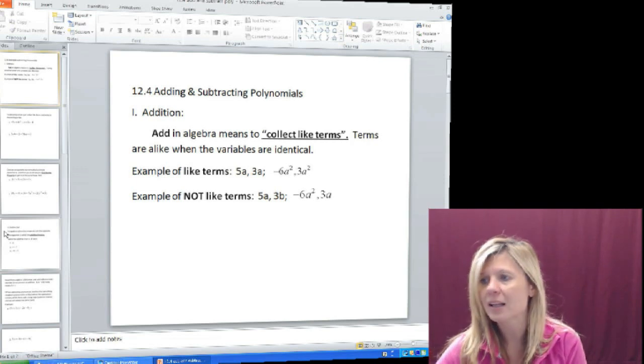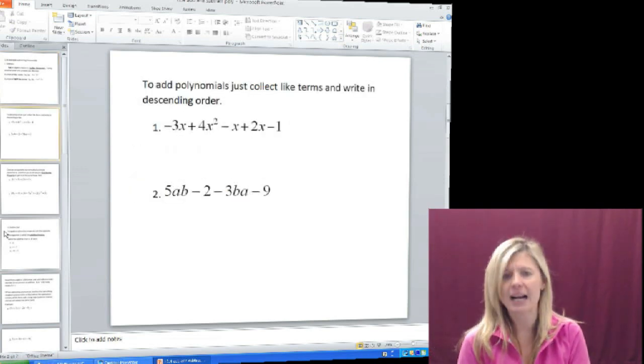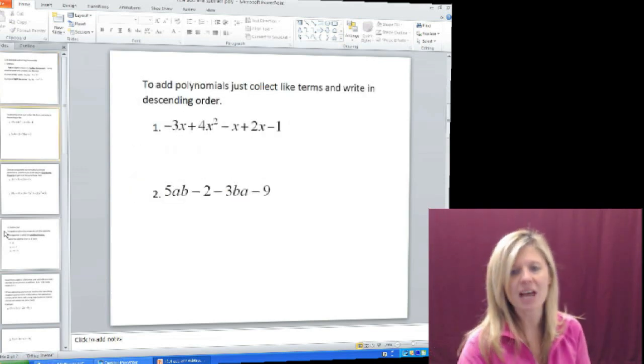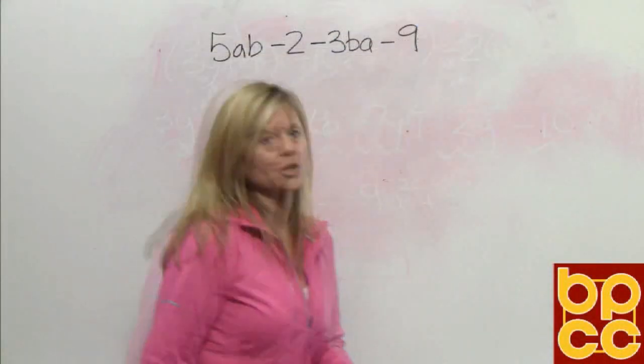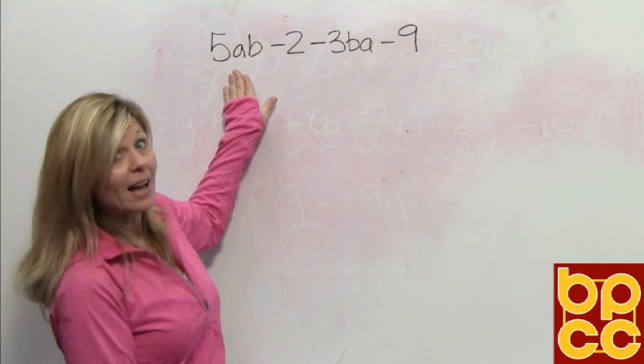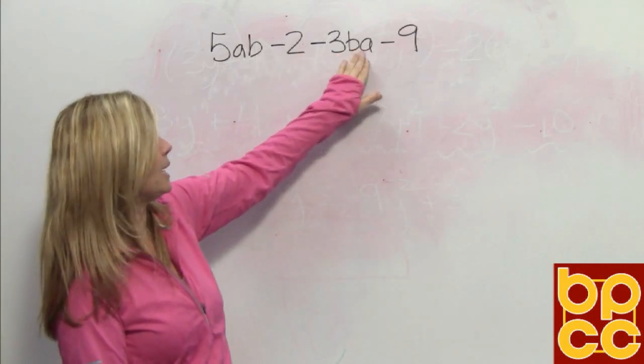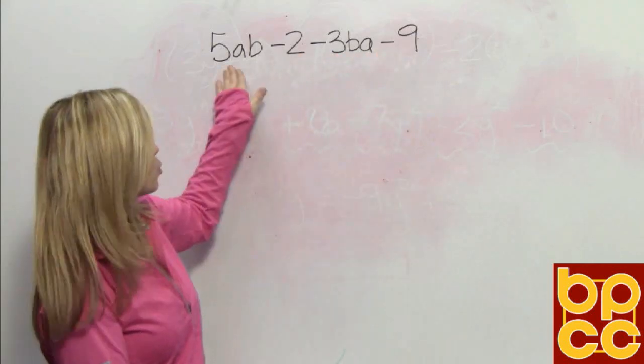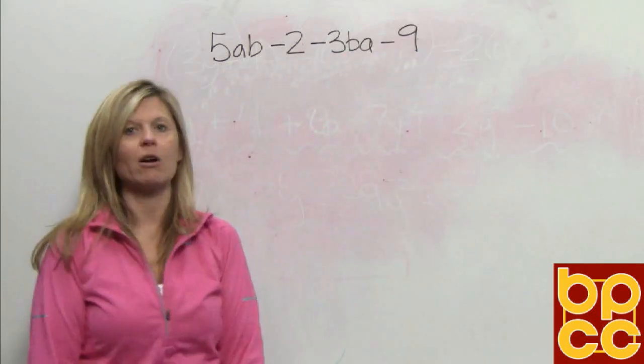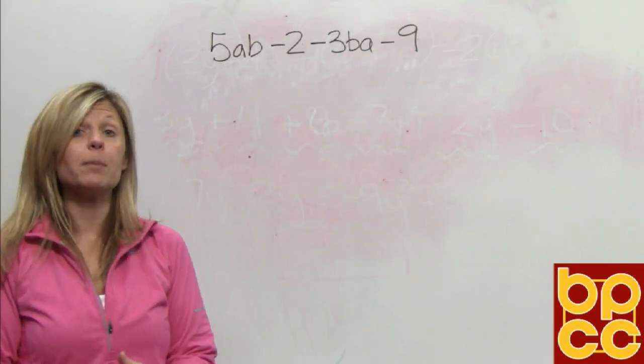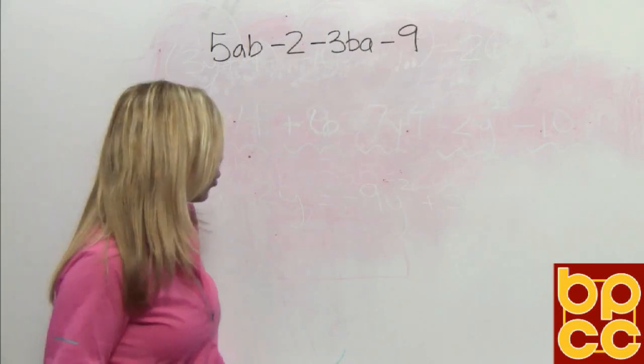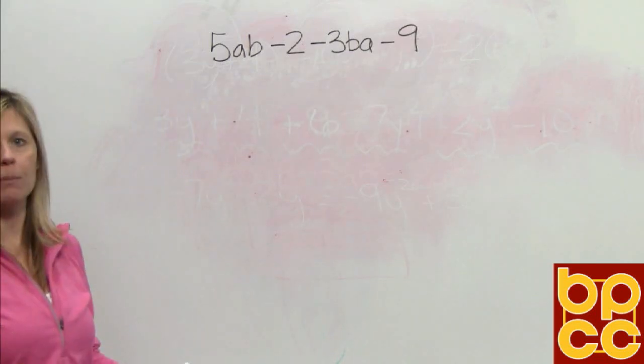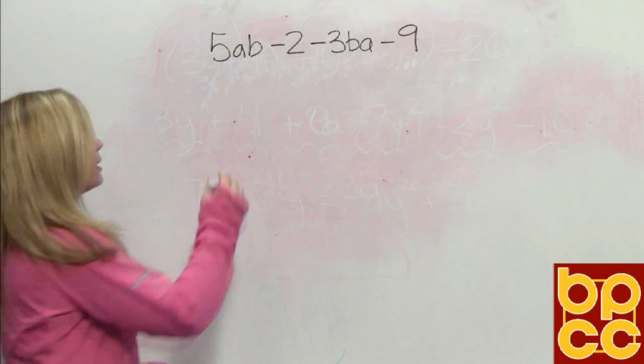Once we know about like terms, then we're going to collect them. Collect means to put together things that are the same. So let's look at a polynomial expression. 5ab minus 2 minus 3ba minus 9. There are four terms there, four monomials. We are looking to put together the ones that are alike to group them. Well, it's quite obvious we have two numbers, constants. So we would put them together.